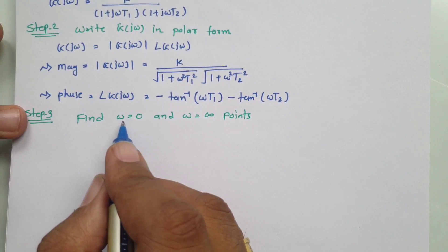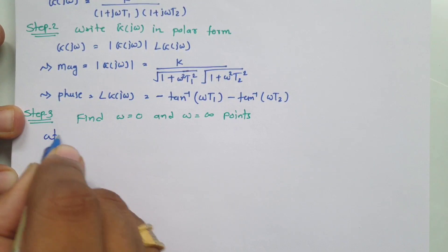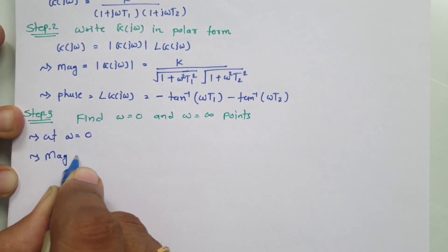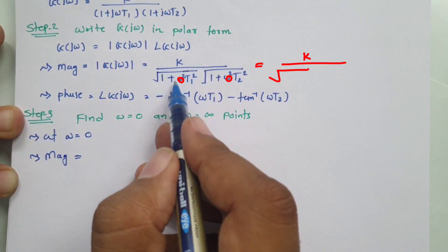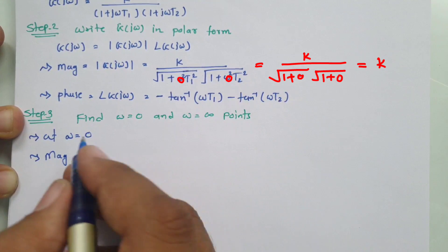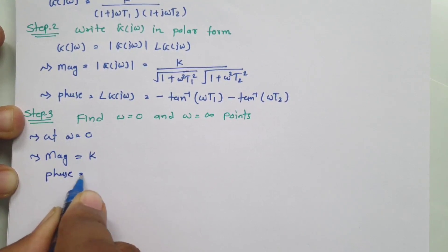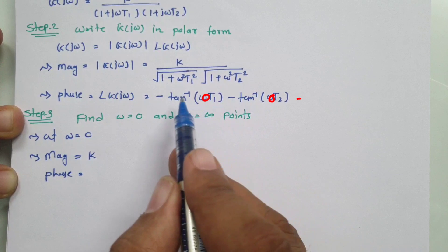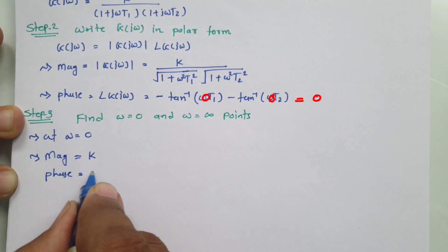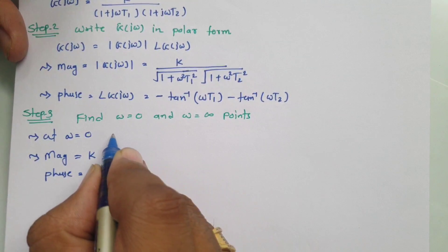To find the point at ω equals 0, we identify magnitude and phase. At ω equals 0, the magnitude is k divided by 1 times 1, which equals k. The phase is minus tan⁻¹(0) minus tan⁻¹(0), so 0 minus 0, which equals 0 degrees. So the point at ω equals 0 has magnitude k and phase 0.